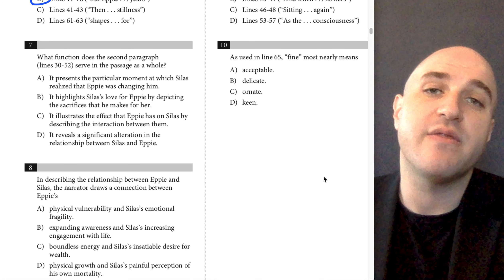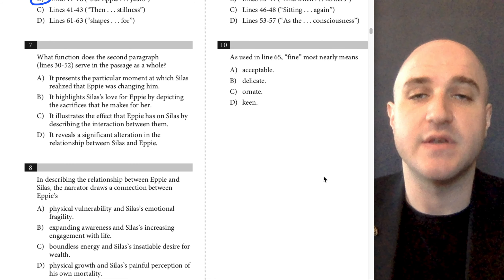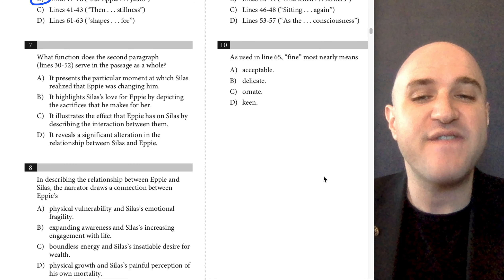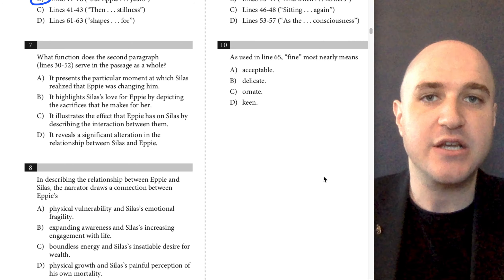So remember what we said was they're out in nature, and then he starts remembering all of this stuff, right? C is exactly that, right? The effect that Epi has on Silas by describing the interaction between them.